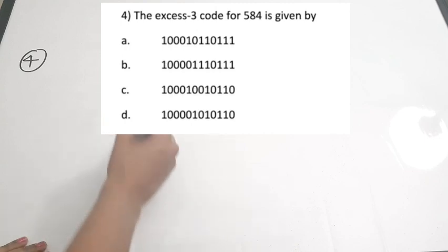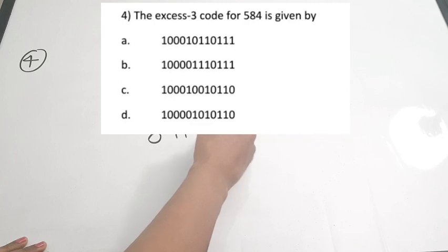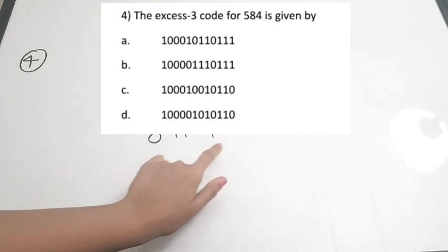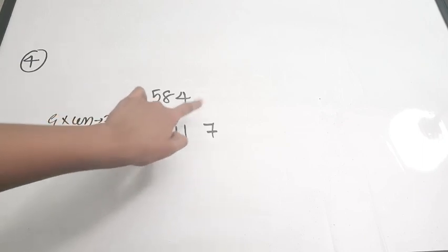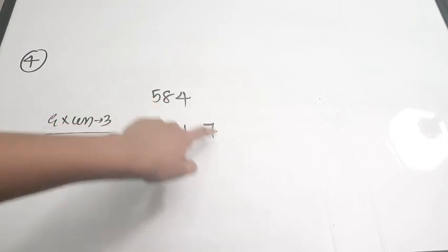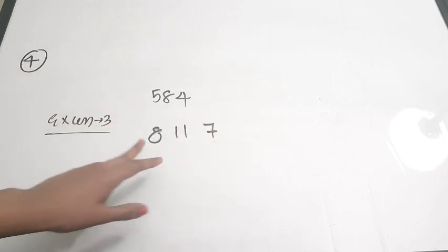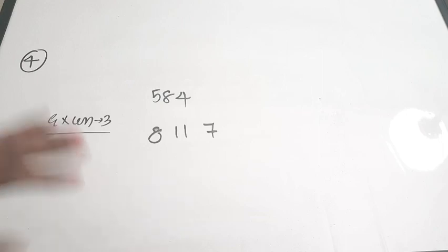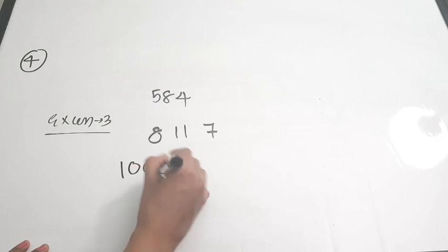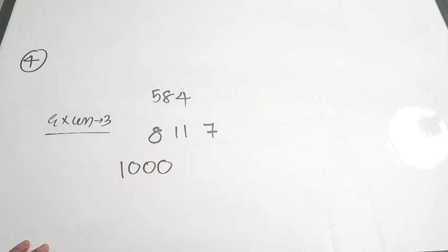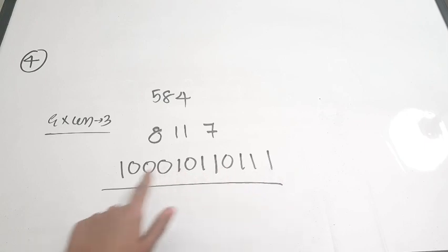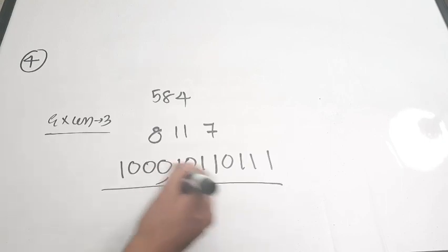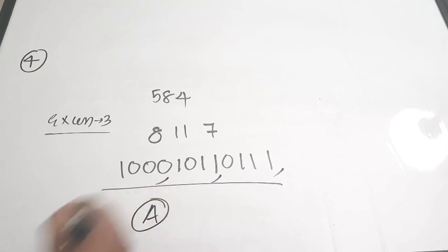Adding 3 to each digit: 5+3=8, 8+3=11, 4+3=7. Now represent each result in 4-bit binary (BCD form): 8 = 1000, 11 = 1011, 7 = 0111. So the XS3 code of 584 is 1000 1011 0111. The correct answer is option A.